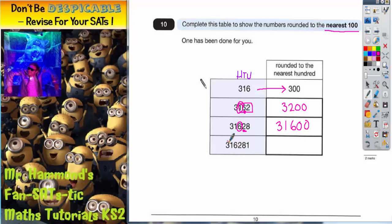Then looking at the next example I've got 316,281. So it's the nearest hundred. I need the number in the hundreds column which is the 2. Look at the next number to help me decide which is 8. So I'm going to round up. So I've got 316,300.